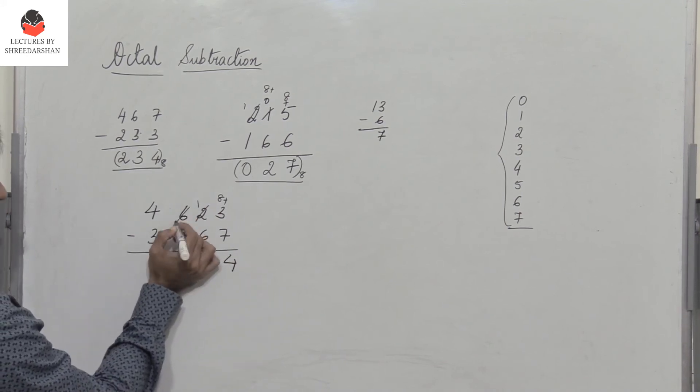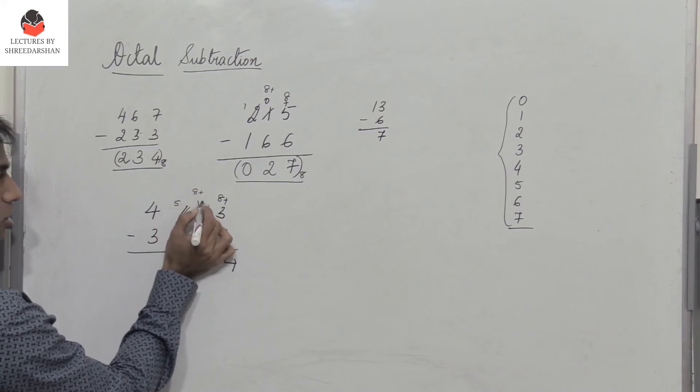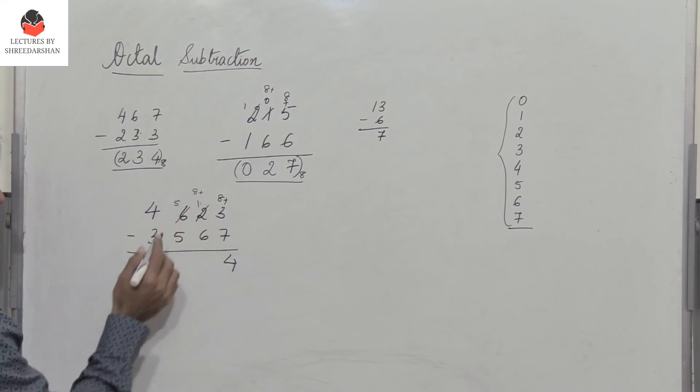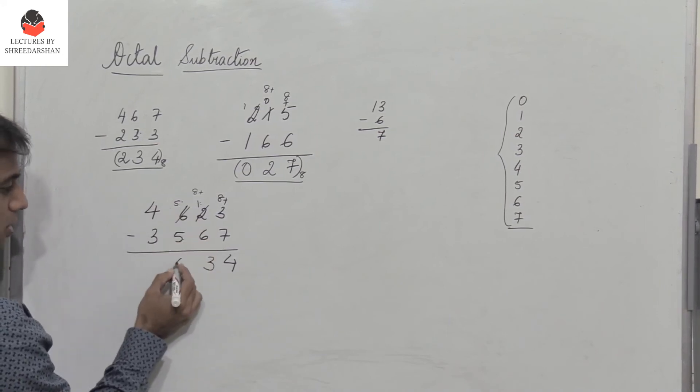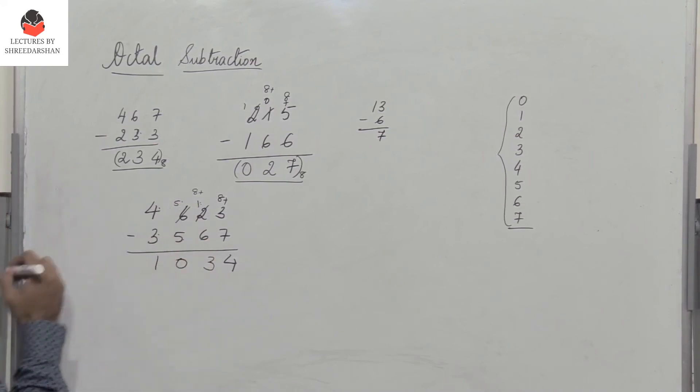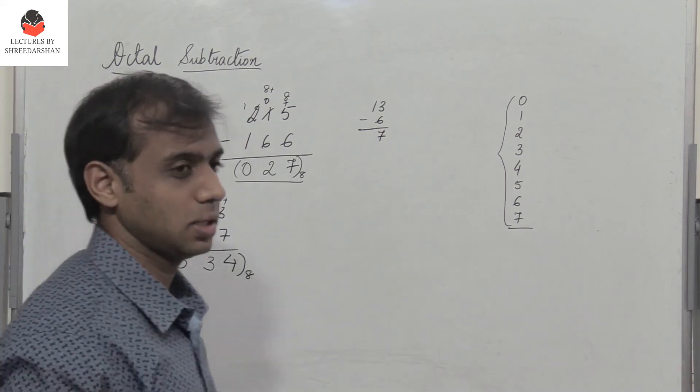Then I have 1 here. So I need a borrow. So this becomes 5. So when I take a borrow, I add 8 to this number. So 8 plus 1 is 9. 9 minus 6 is 3. 5 minus 5 is 0. 4 minus 3 is 1. So this is the answer in octal, which is 1034. So this is how we perform octal subtraction.